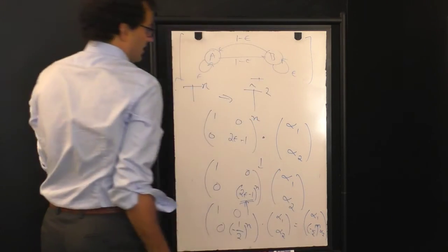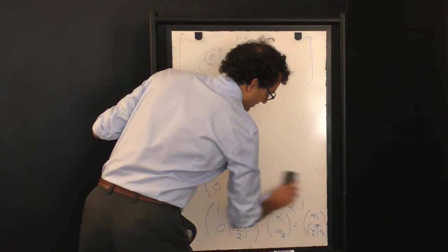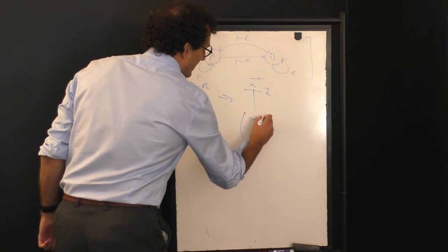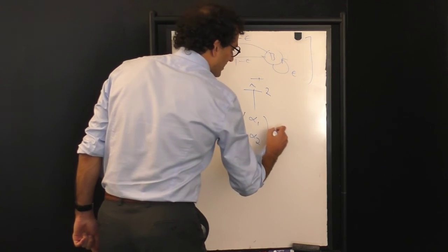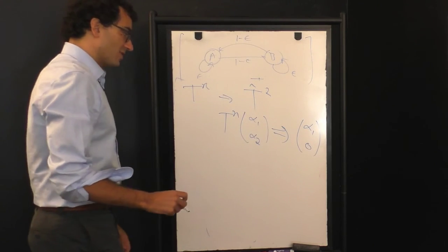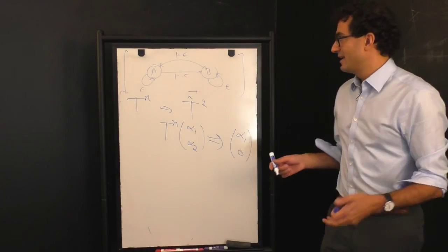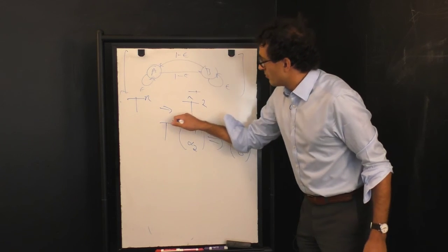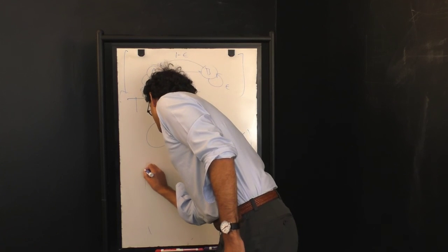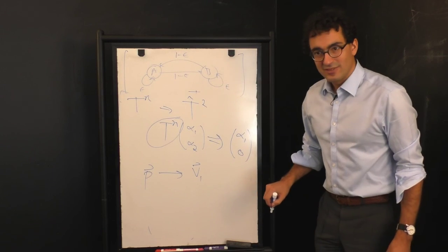But in general, as you take increasingly large powers of this T, you will find that no matter what you put into the system, no matter what combination of alpha 1 and alpha 2 you put into the system, out the other side you will get a vector that is pure alpha 1. Another way to say this, using the language of the probability of being in each of these states, is that if you coarse-grain your data enough, the corresponding model will take any probability distribution and map it directly to that first eigenvector of the system.